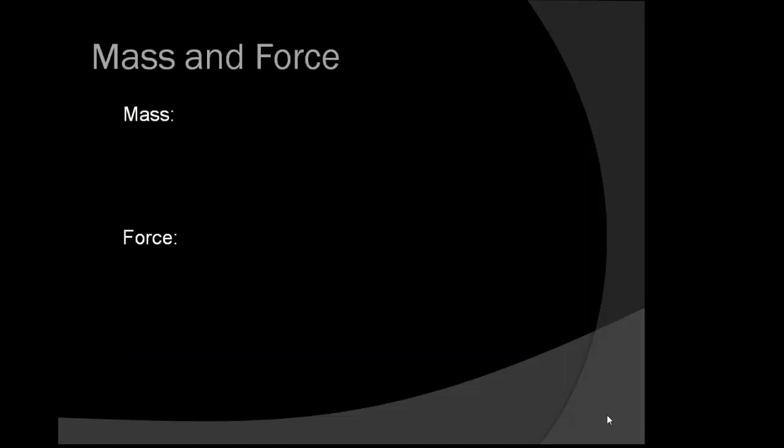First on the list of fundamental properties are mass and force. A common definition frequently given for mass is that mass is a fundamental property of an object that measures the quantity of matter contained within the object. Please note that the mass of an object is not affected by any external forces placed upon it.